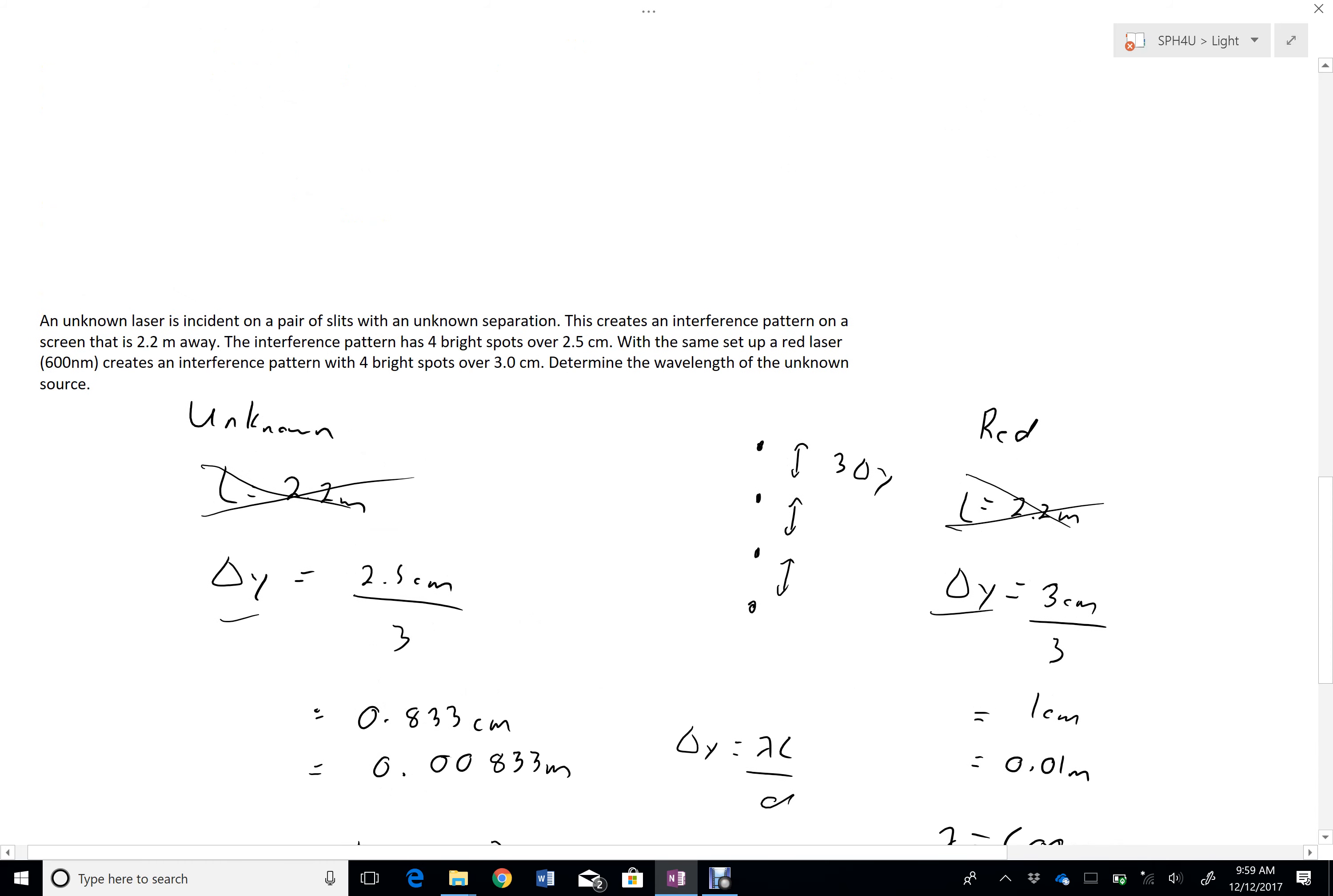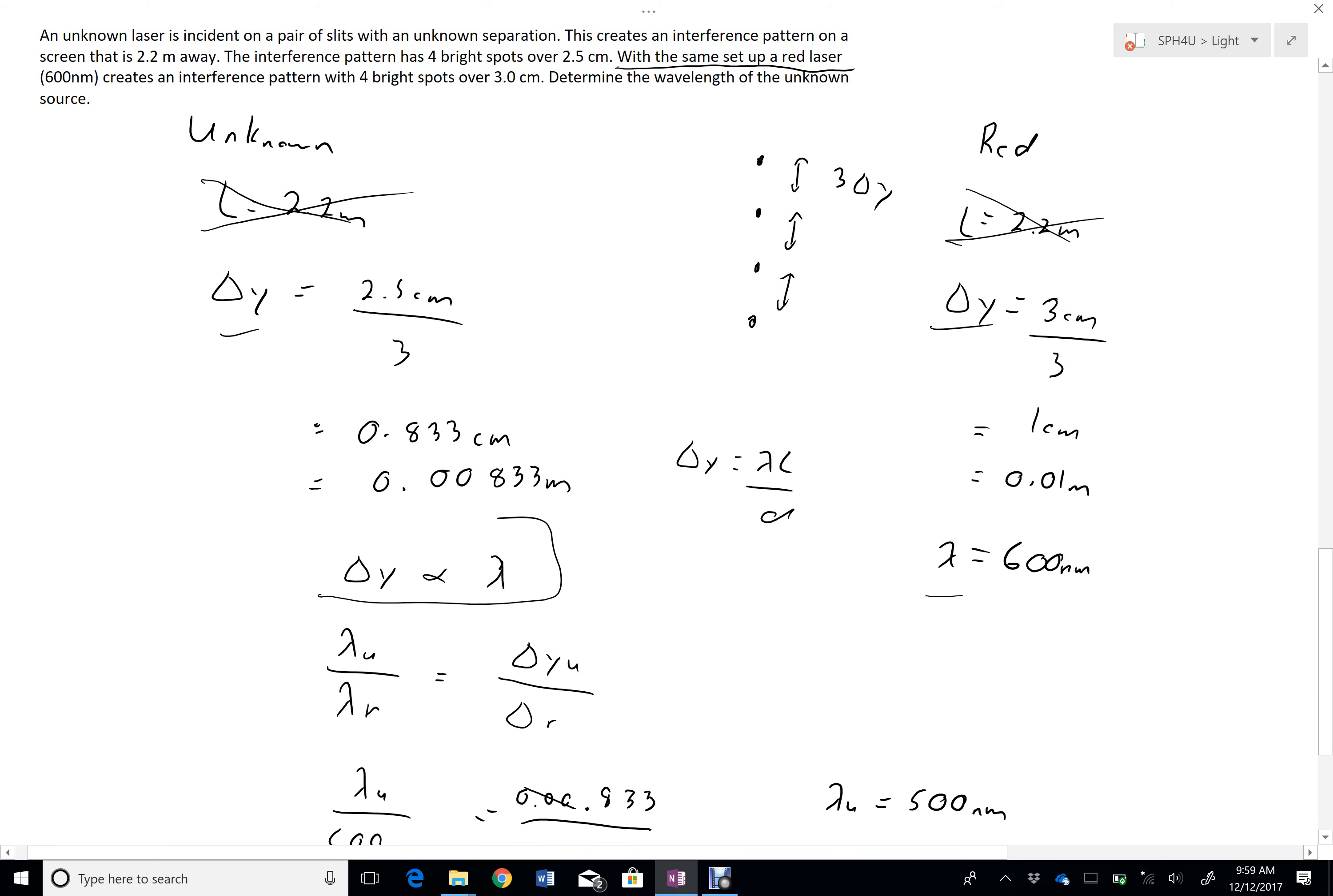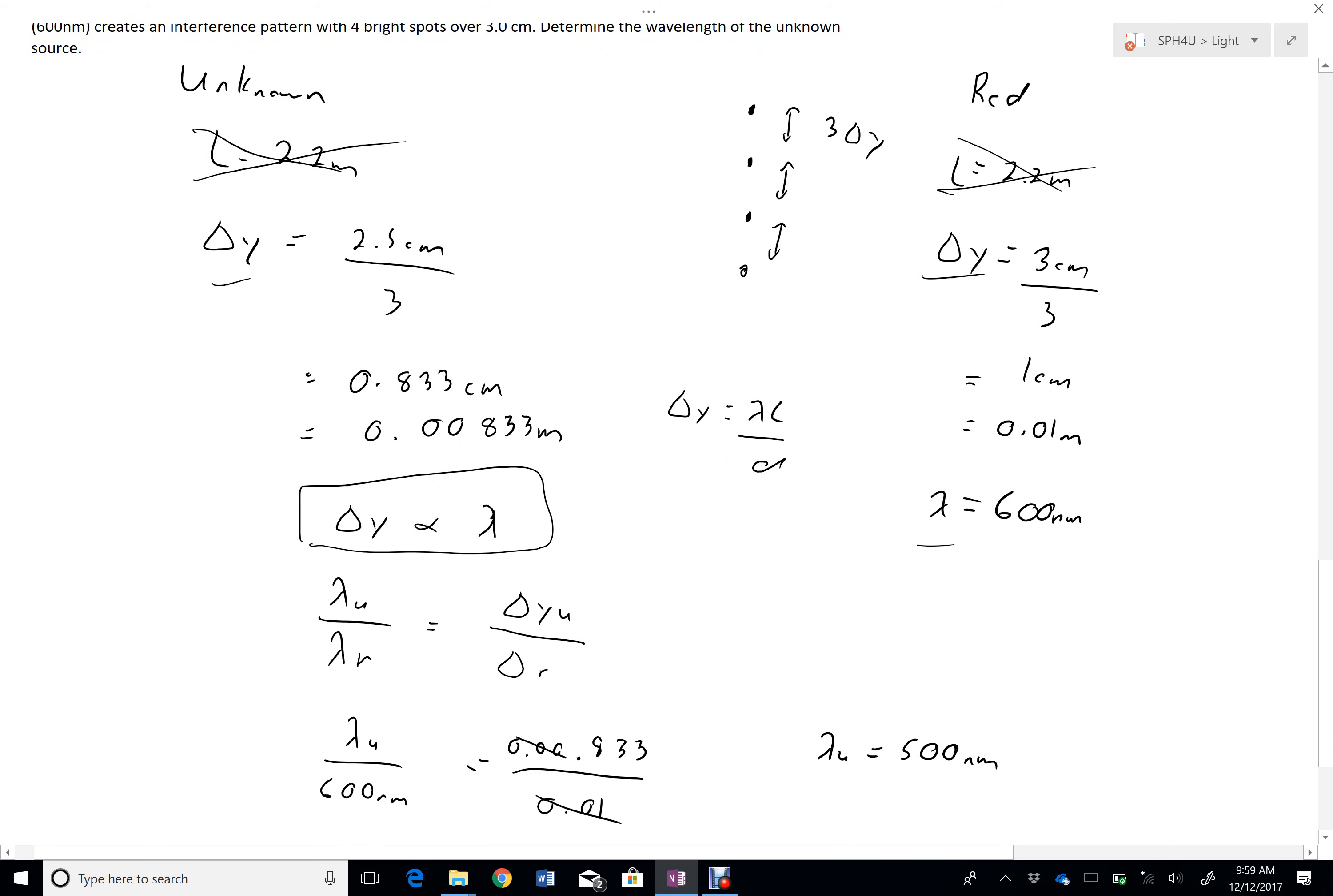So, because everything else, the setup is the same, I can focus on just the variables that changed, look at their relationship, and use a ratio to predict them. Or, you can go ahead and find D and bring D over and solve it that way. Either way is acceptable.